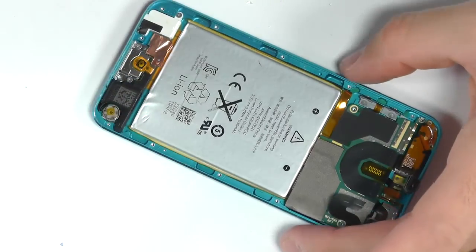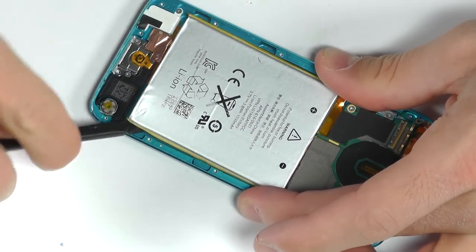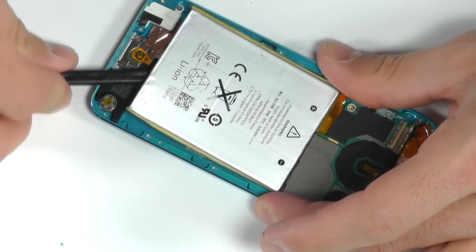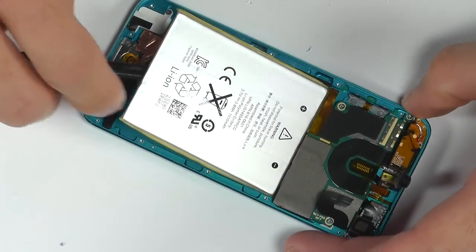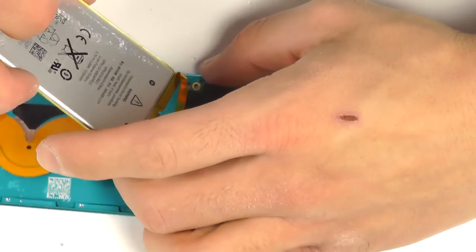With our screws removed, we can now use our spudger and get under this battery here, begin to peel it up as it is one piece and fully connected to the motherboard.